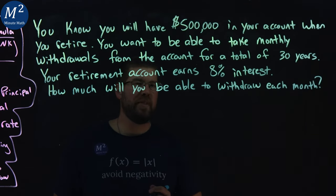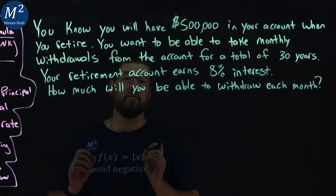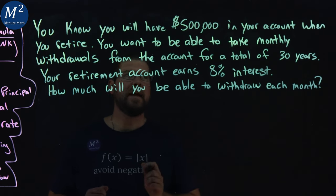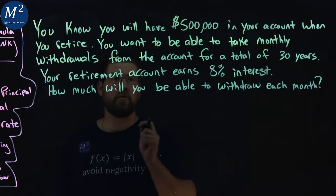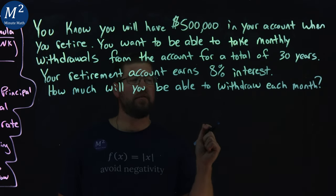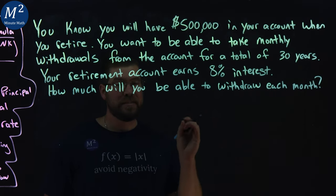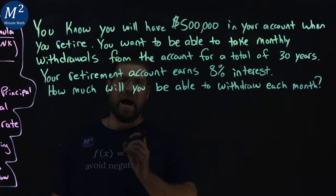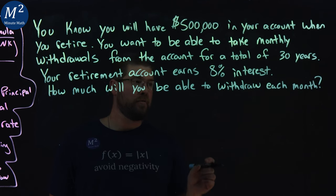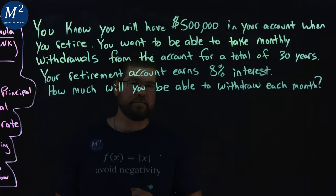You know you will have $500,000 in your account when you retire. You want to be able to take monthly withdrawals from the account for a total of 30 years. Your retirement account earns 8% interest. How much will you be able to withdraw each month? Let's learn.